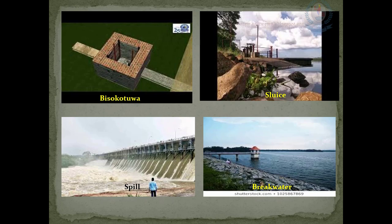The next part is the sluice. The sluice was created for the purpose of letting water out of the dam into a canal. The water stored in a tank exerts high pressure on the dam. Most tanks have two sluices — the upper sluice and the bottom sluice. The bottom sluice is constructed at the bottom level of the tank so that all the water stored can be let out into the valley. The upper sluice is constructed at a level slightly above the bottom sluice. In smaller tanks, a Biso Kotuwa has been constructed and water is let out through the sluice itself.